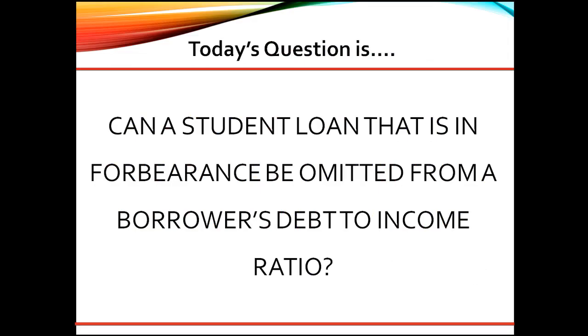Today's question is: can a student loan that is in forbearance be omitted from a borrower's debt-to-income ratio?